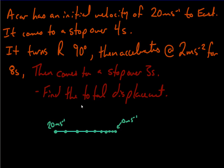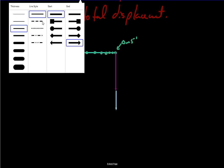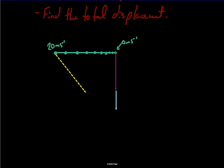Then it says it turns right, which from the car's perspective is going to be towards the south. And then it speeds up for a certain amount of time — getting faster and faster — then slows down. So we essentially have to do three bits of math before we can even get to making this a vector problem.